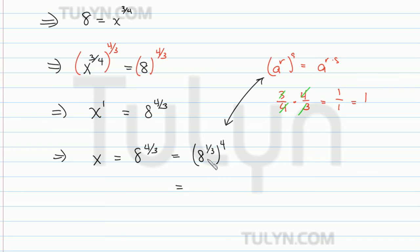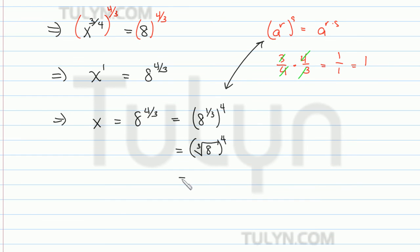But 8 to the 1 third power, since rational exponents are power over root, this is the same thing as the cube root of 8 to the 4th power.